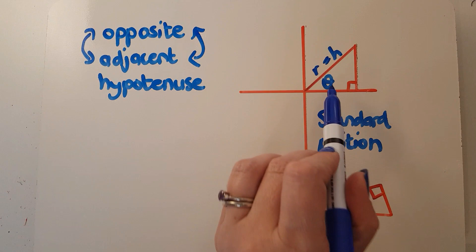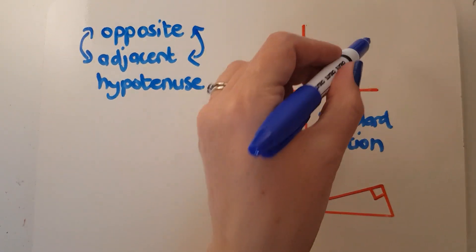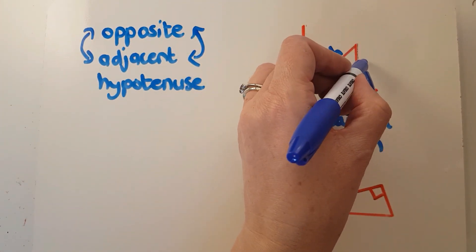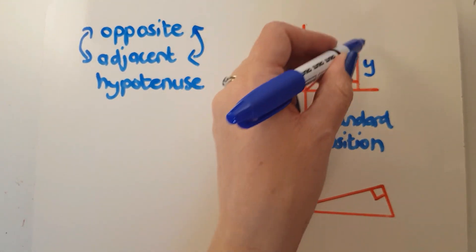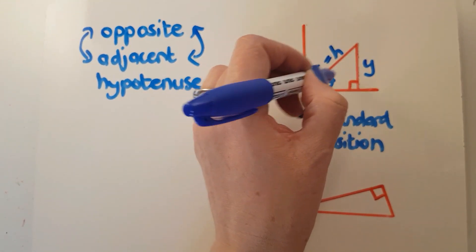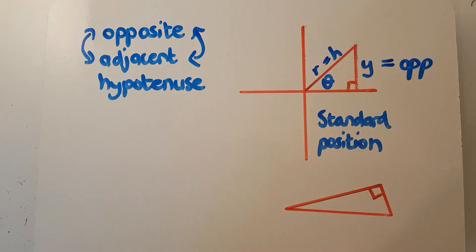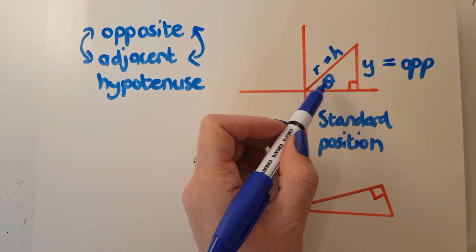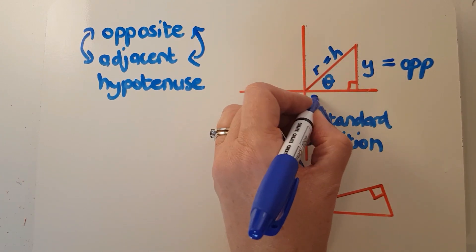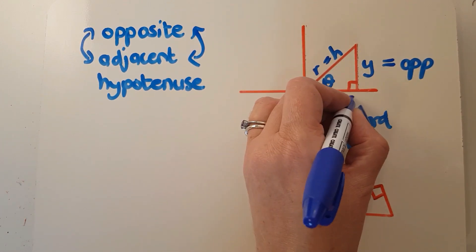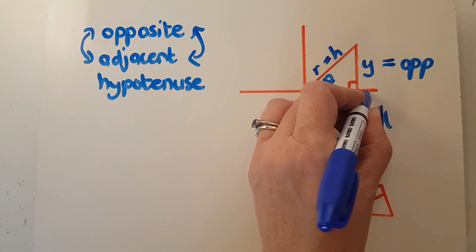So for theta, we know that we were calling this one y, so the y distance here would be the opposite side. So in this triangle, the y would be the opposite side. And for theta, in this triangle, the x here would be the adjacent side. Adjacent means next to.